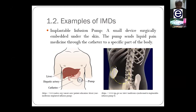We also have the implantable infusion pump, which works similarly to the neurostimulator in helping to alleviate pain. Unlike the neurostimulator, which intercepts the pain signal, this device actually sends liquid pain medicine into our body to suppress the pain — so instead of intercepting the signal, it delivers a painkiller directly.